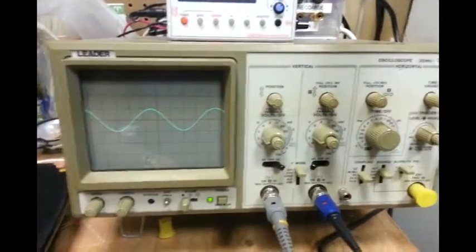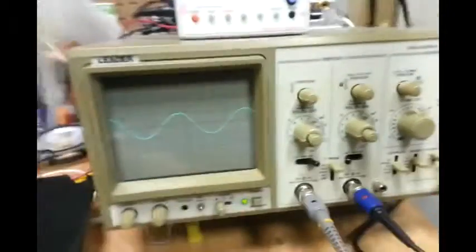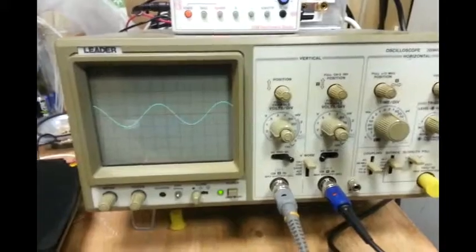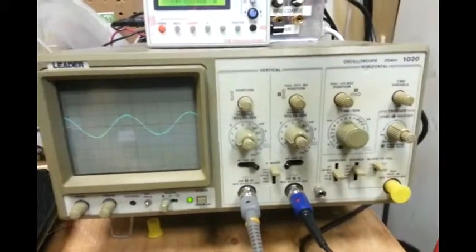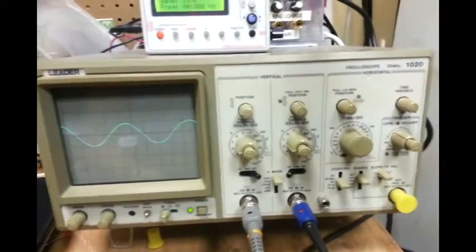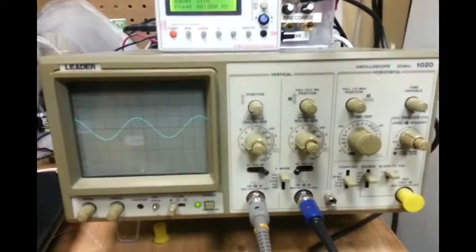And this is the oscilloscope I have and this is a Leader 1020. She's good, she's big, she's analog. You can see it takes up quite a bit of bench space. But okay, she'll do the job. Maybe I'll get a nicer one one day.